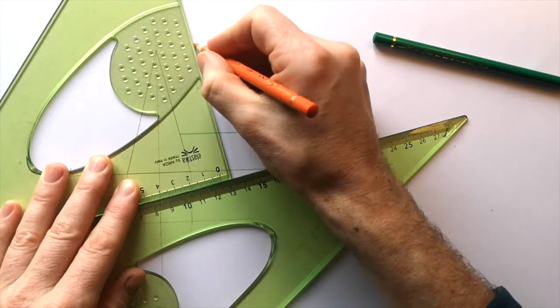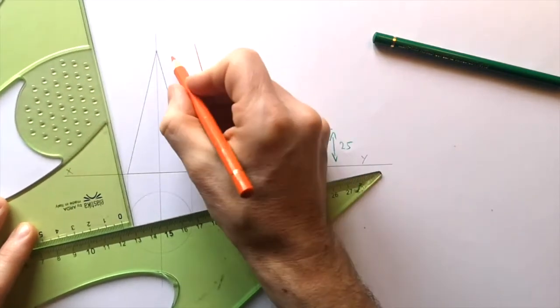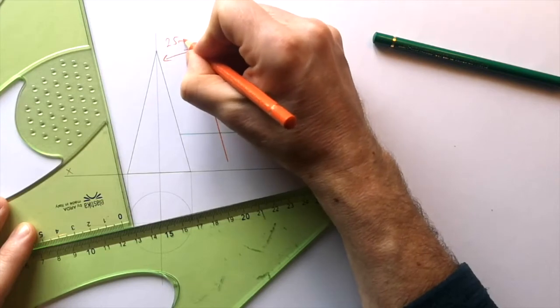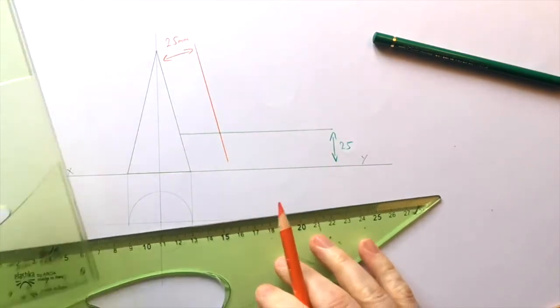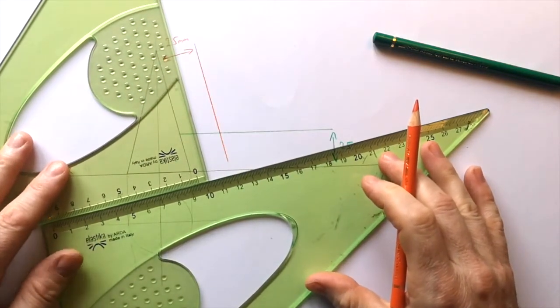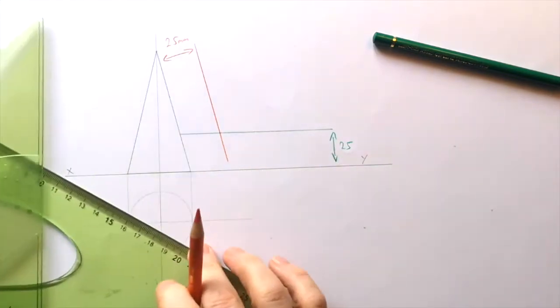So that gives me this line here, which is 25 millimeters from the edge of this. It's worth getting to know how to do that little trick with the set squares. It really makes it much, much easier than any of the other methods.